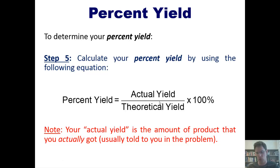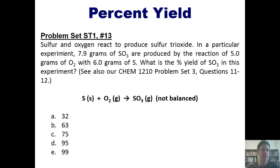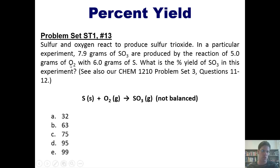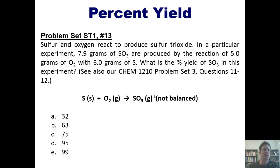Let's look at a problem. Sulfur and oxygen react to produce sulfur trioxide according to the equation shown here, which is not balanced. In a particular experiment, 7.9 grams of SO3 are produced by the reaction of 5 grams of O2 with 6 grams of sulfur. What is the percent yield of SO3 in this experiment? I invite you to attempt this on your own using the steps I just outlined. If you still have some confusion, you're welcome to click the link here to a separate video where I'll show you how to do it on the board.